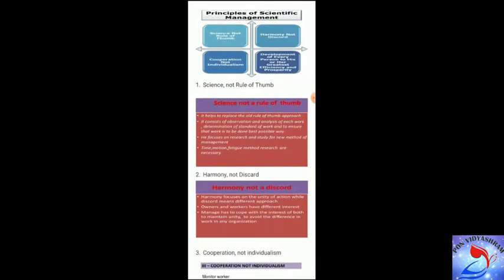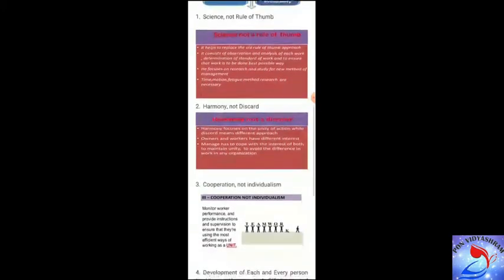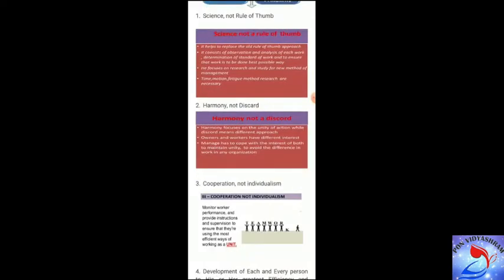There are four principles under scientific management. The first one is science, not rule of thumb. According to this principle, Taylor stressed that each job performed in the organization should be based on scientific inquiry and not on intuition, experience, and hit-and-miss methods. Rule of thumb means managers relied on personal judgment in attending to problems they faced in the course of managing their tasks.